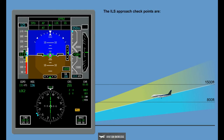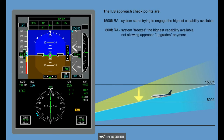The ILS approach checkpoints are: 1,500 feet RA — system starts trying to engage the highest capability available; 800 feet RA — system freezes the highest capability available, not allowing approach upgrades anymore.